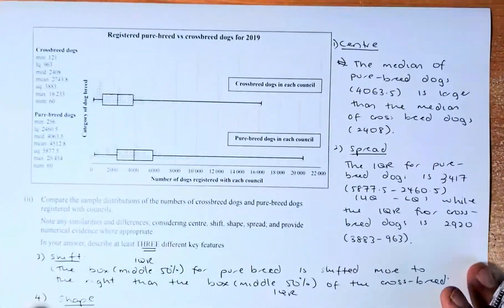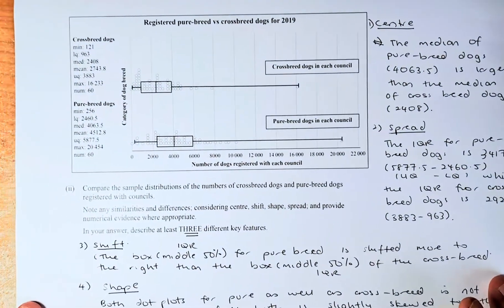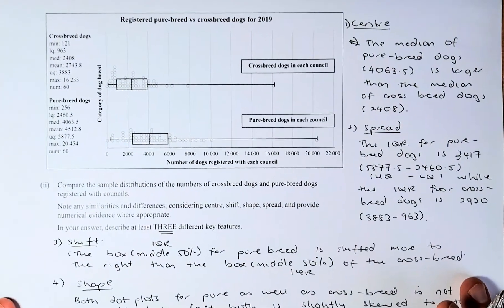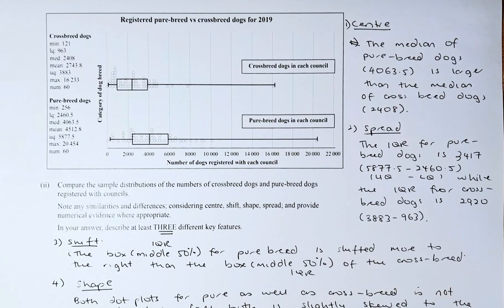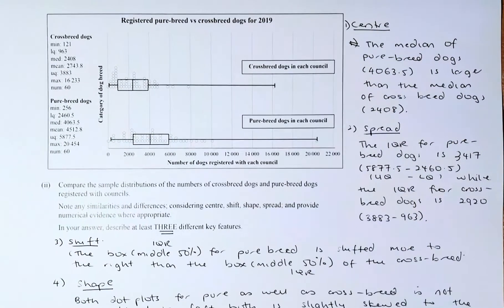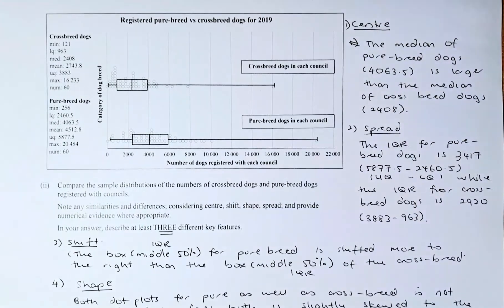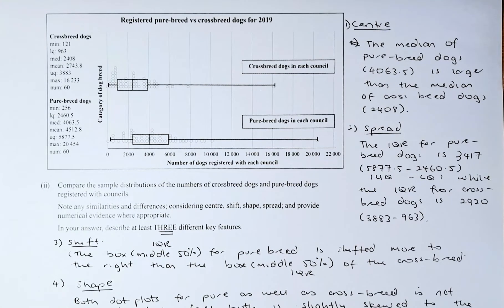Let's do question 2A part 2. The question in part 2 sounds like this: compare the sample distribution on numbers of crossbred dogs and purebred dogs registered with each council. We are using this graph to compare the differences or similarities. You need to consider centre, shift, shape, spread, and provide numerical evidence where appropriate.